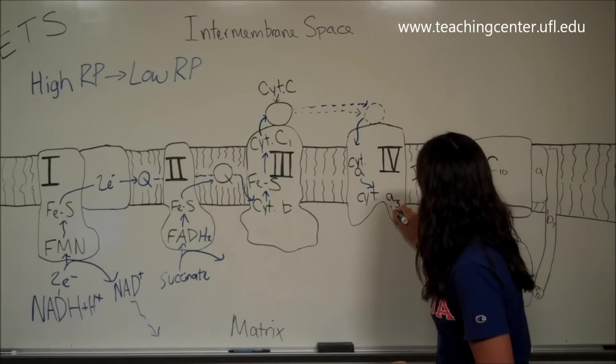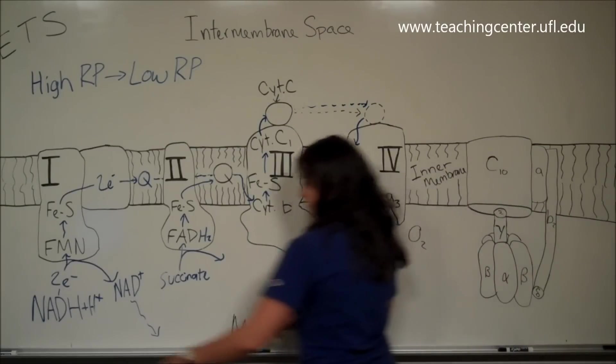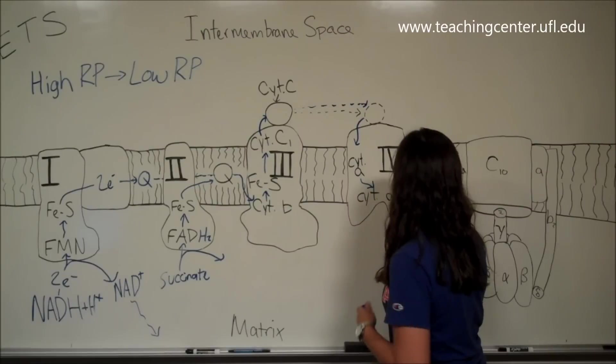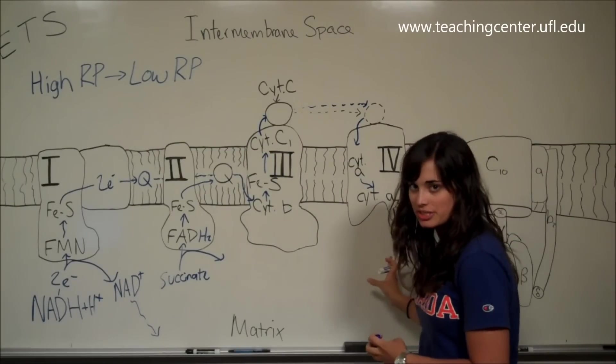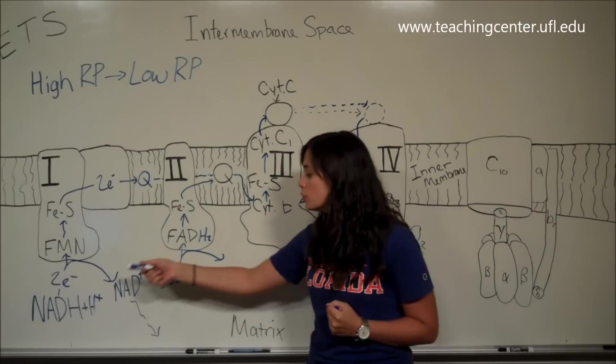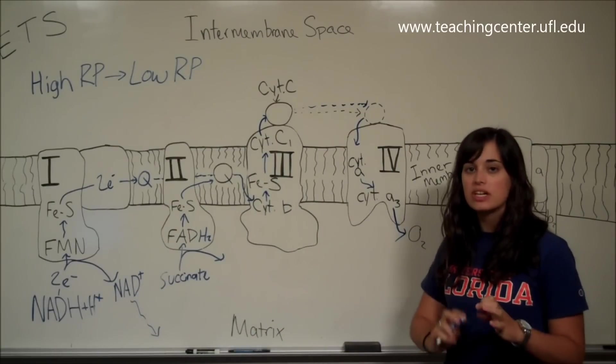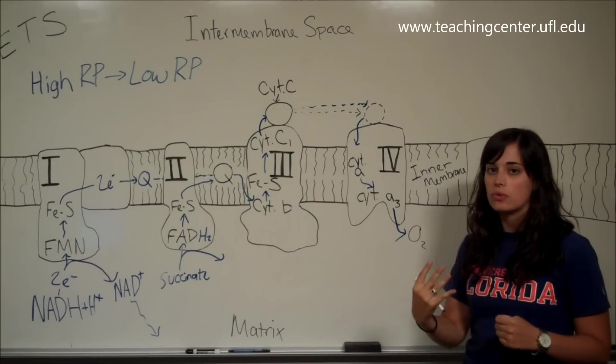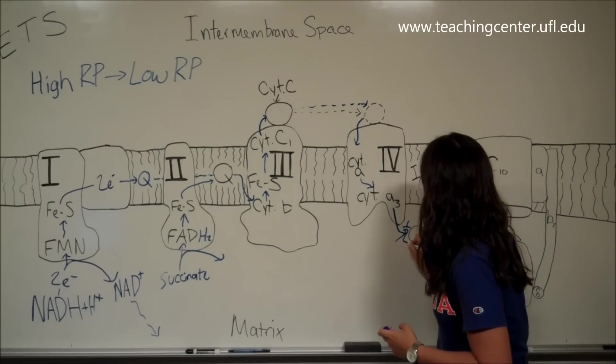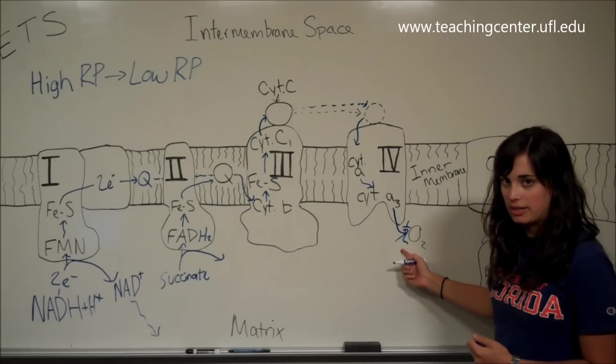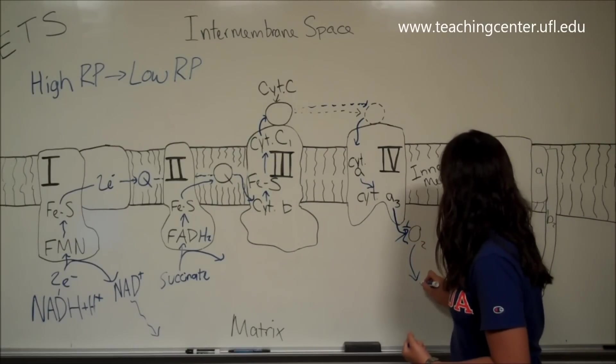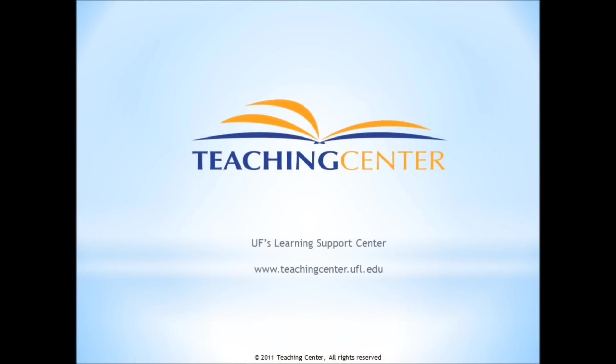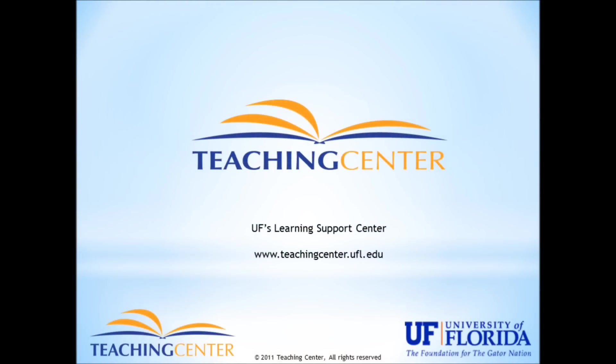And then, cytochrome A3 is going to finally reduce oxygen down here. Remember, we're only talking about two electrons from NADH, and those two electrons can only reduce one oxygen atom. Here, we have a diatomic oxygen that requires four electrons. So really, what we're reducing is one half of this oxygen right here. And that is, of course, going to make water, which can then just sort of flow off.